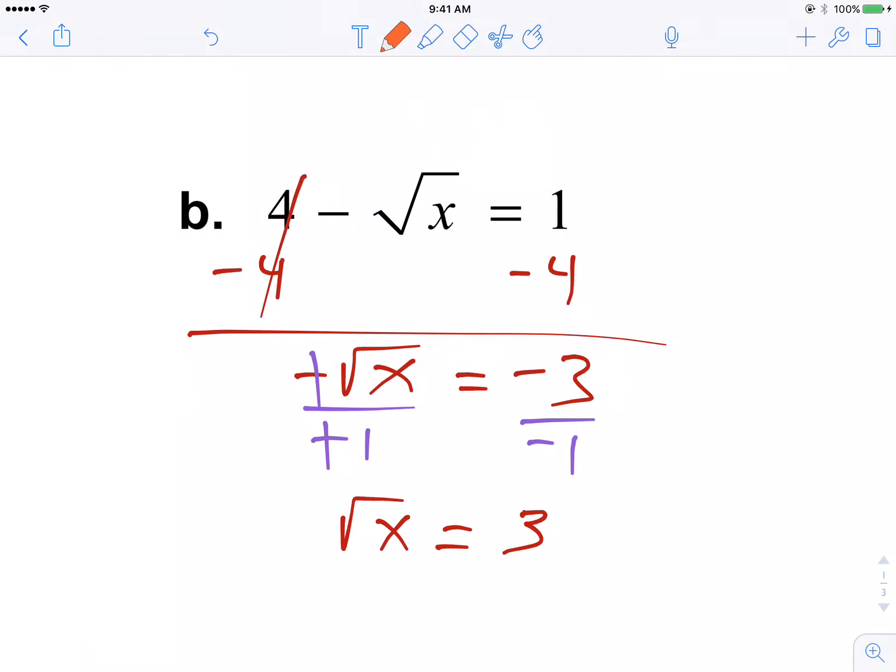Let's square both sides. 3 times 3 is 9. There you have it.